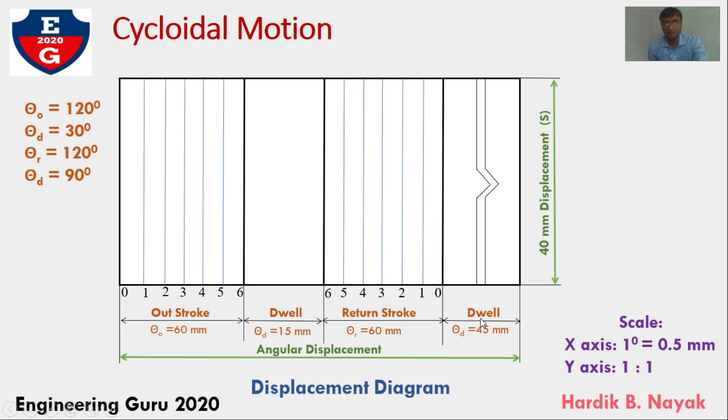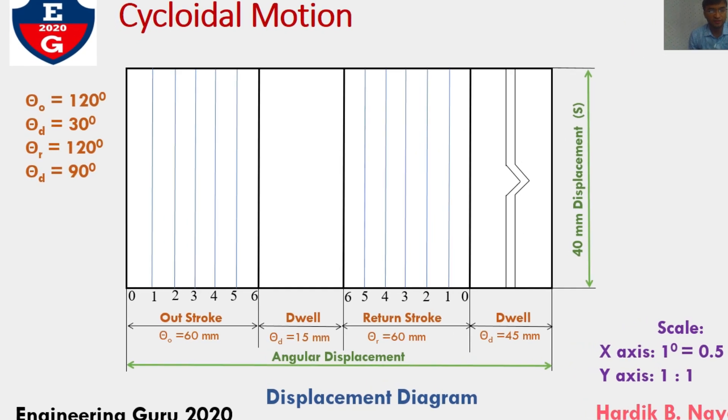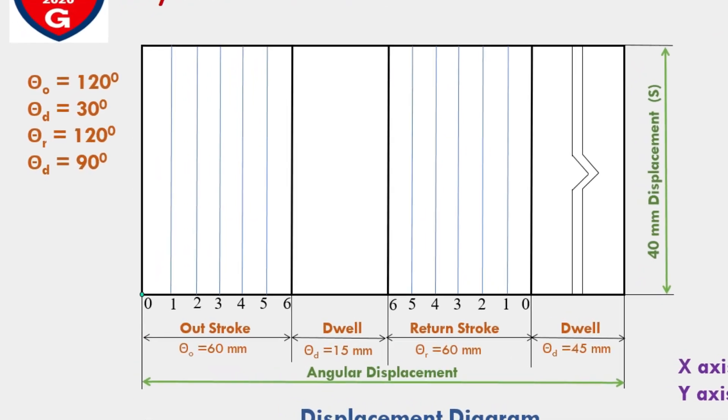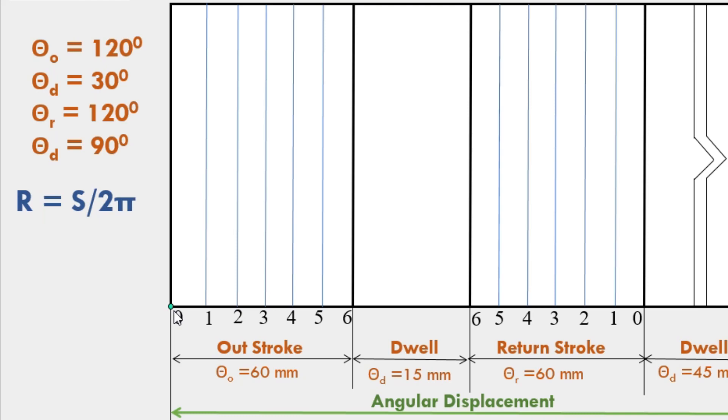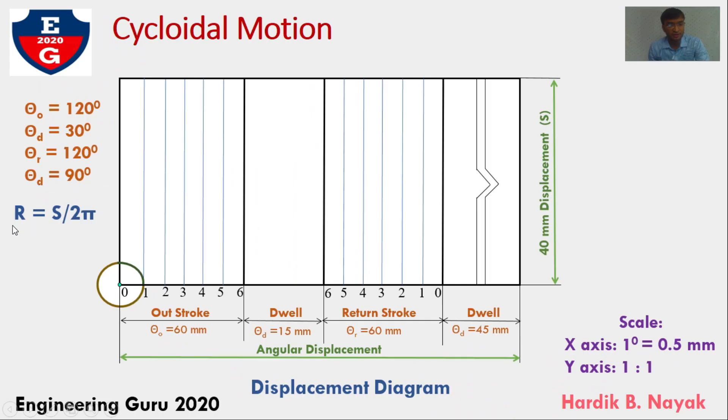After return stroke, there is final dwell that is 90 degree, shown by broken section. Here, starting with outstroke, first take point on 0 and draw one circle for finding radius from this formula: R equal to S upon 2 pi, where S equal to linear displacement. Here, we have S value, this is also called lift of the follower equal to 40 mm. So, from this formula, you can find R value equal to 6.4 mm.